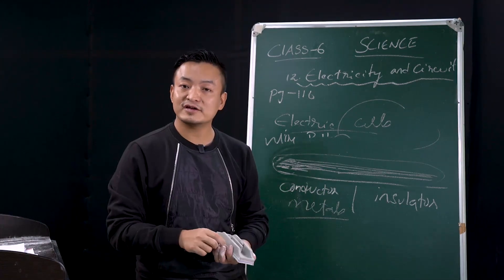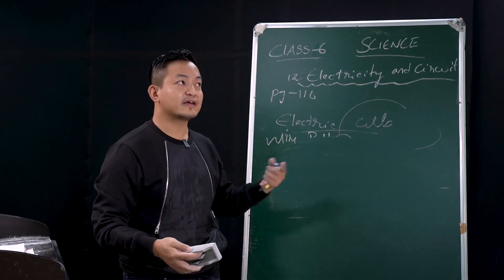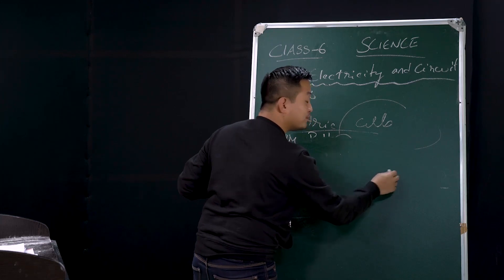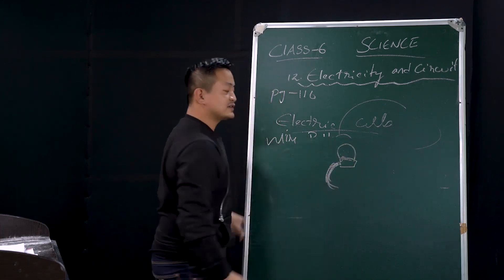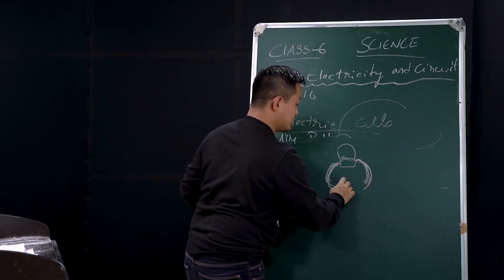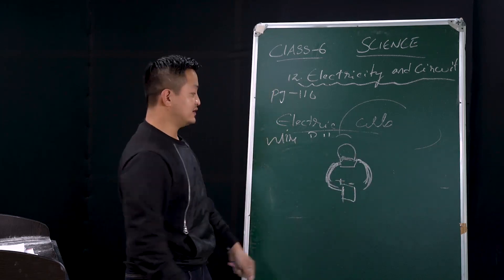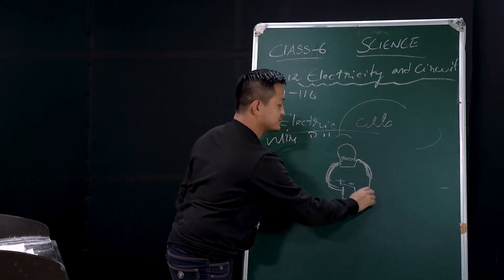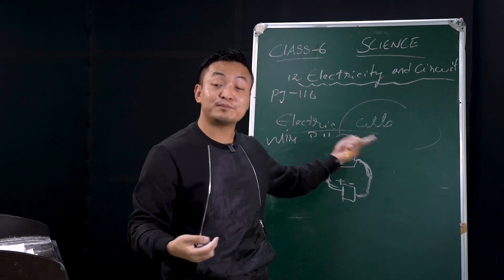Now we'll end with one simple activity that demonstrates conductors and insulators. We'll take a battery and a bulb connected with a conducting wire. The circuit is open right now. We can join the two wires and the bulb will glow.